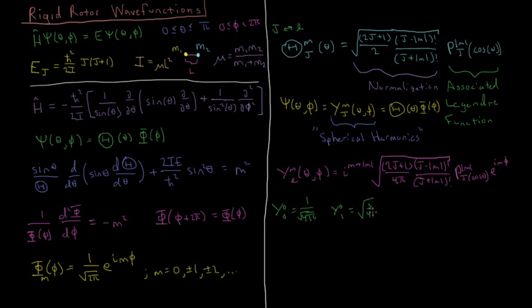Then for j equals 1, m equals 0, we'd have 3 over 4 pi times cosine of theta. So the associated Legendre function p of 1, 0 would equal x. So p of 1, 0 of cosine theta is just cosine theta.